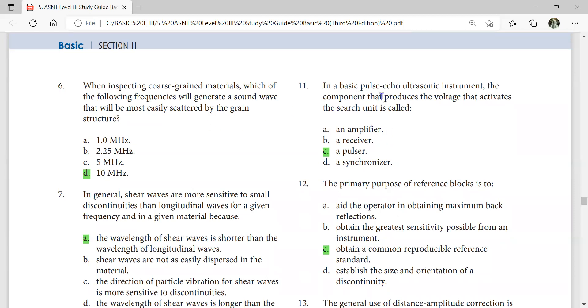In the basic pulse echo ultrasonic instrument, the component that produces the voltage that activates the search unit is called a pulsar.